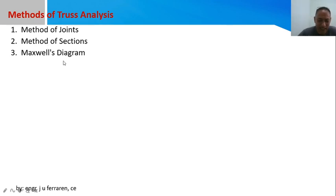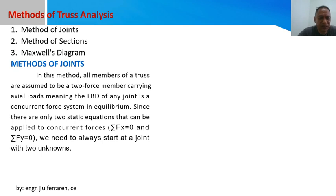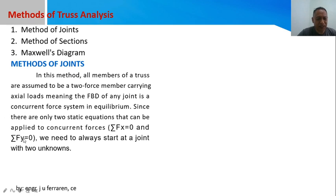In the method of joints, all members of the truss are assumed to be two-force members carrying axial forces. The FBD of any joint is a concurrent force system in equilibrium. Since there are only two static equations that can be applied — summation of forces horizontal equal to zero and summation of forces vertical equal to zero — we need to start with a joint that has only two unknowns.